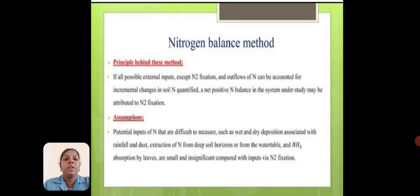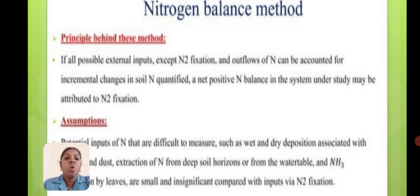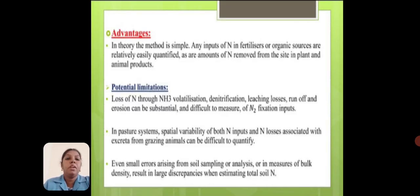Nitrogen balance method — principle: if all possible external inputs except nitrogen fixation, and outflows of nitrogen, can be accounted for, incremental change in the soil nitrogen can be qualified. A net positive nitrogen balance in the system under study may be attributed to nitrogen fixation. In theory, this method is simple. Any inputs of nitrogen from fertilizer or organic sources are quantified, as is the amount of nitrogen removed from the site in plant and animal products.